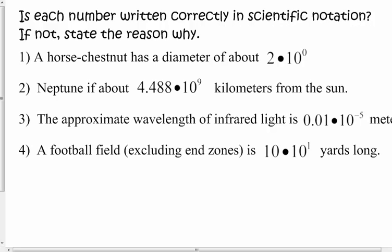Is each number written correctly in scientific notation? If not, state the reason why. We have four examples. Does it have a number between one and ten times the power of ten? Well, two is a number between one and ten, and ten to the zero power means one — so that's two times one, which is the number two. Yes, this is the number two written in scientific notation. Neptune is about 4.488 thousand times ten to the ninth kilometers from the sun — yes, that is a number in scientific notation. It has both required parts.